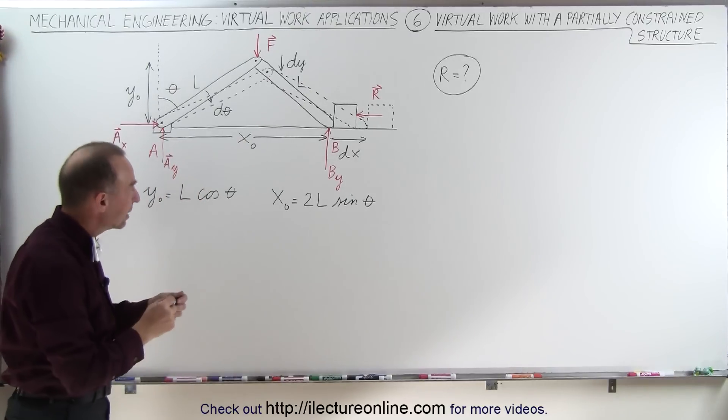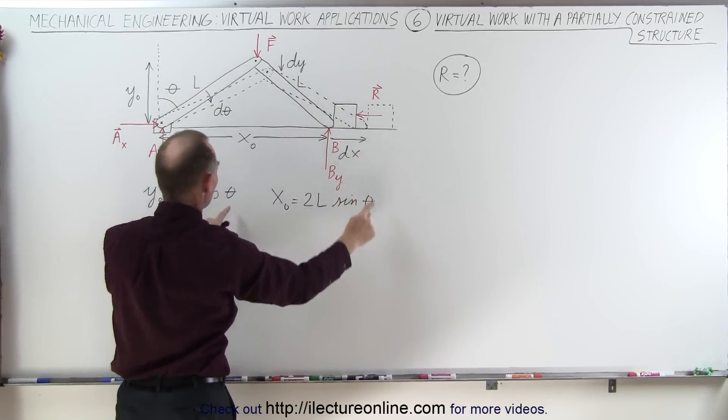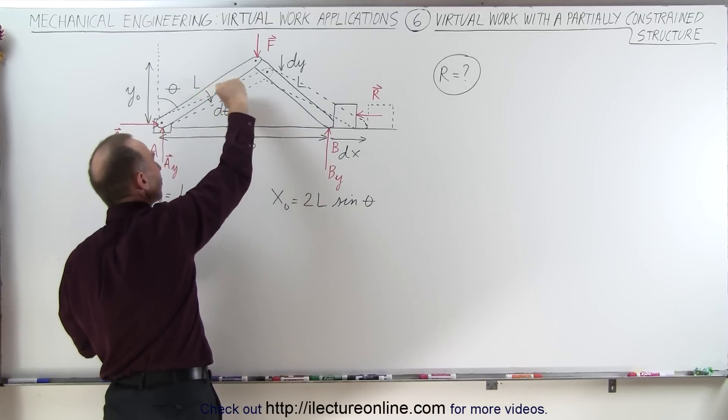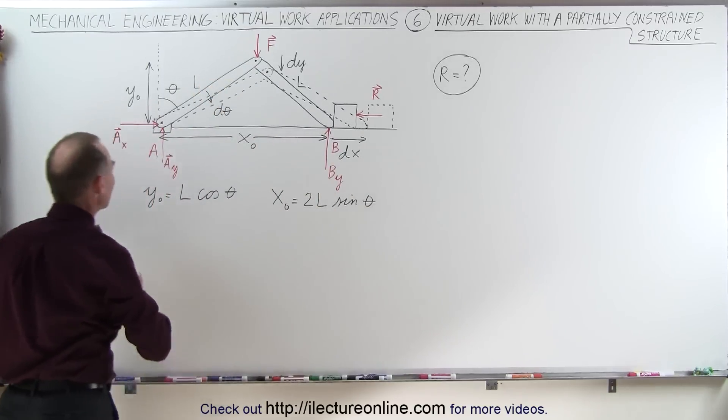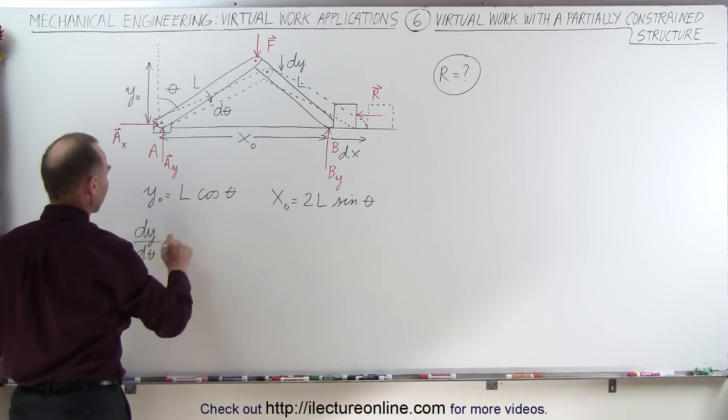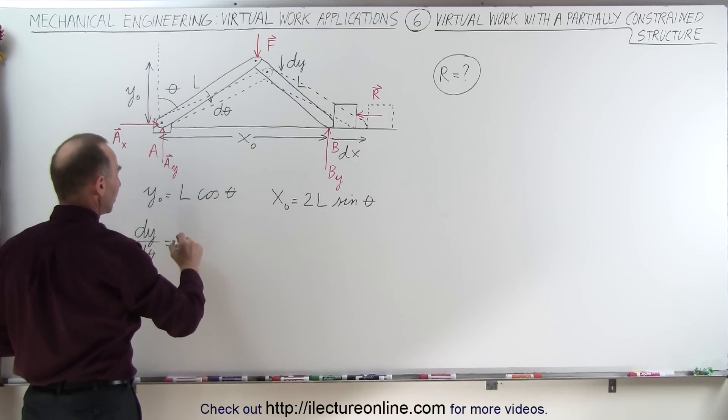Now, we can find the change in Y and the change in X in terms of the change in the angle theta. So it's going to swivel down through a small angle d theta, which means that dy d theta can be found by taking the derivative of this. The derivative of cosine is the negative sine, so minus L times the sine of theta,